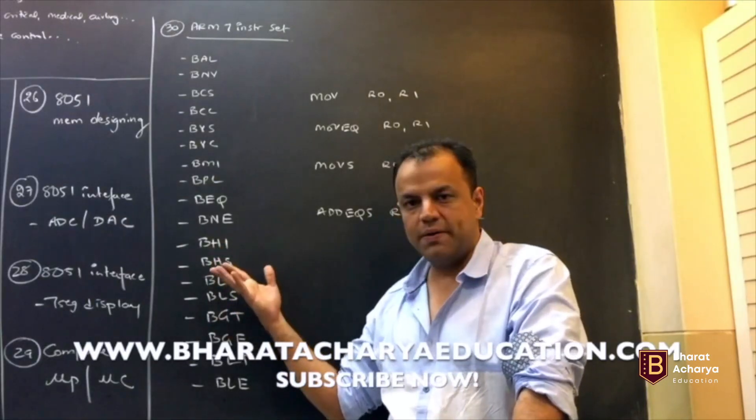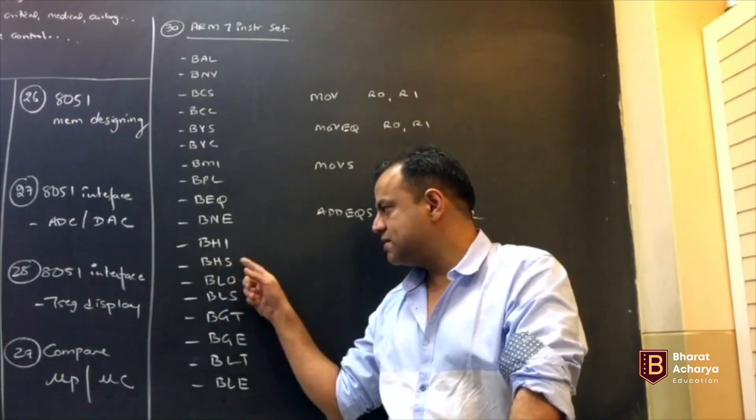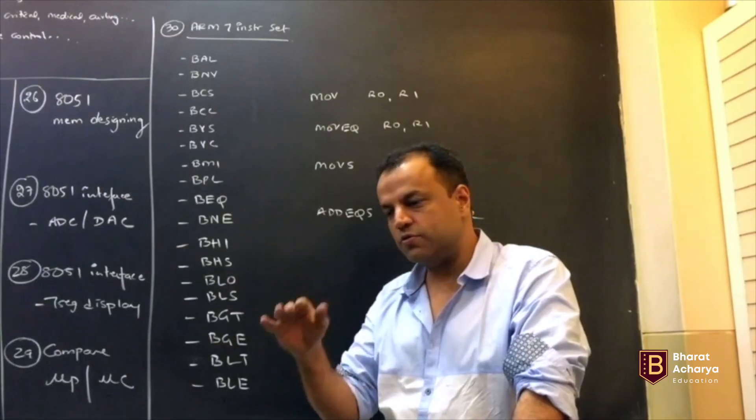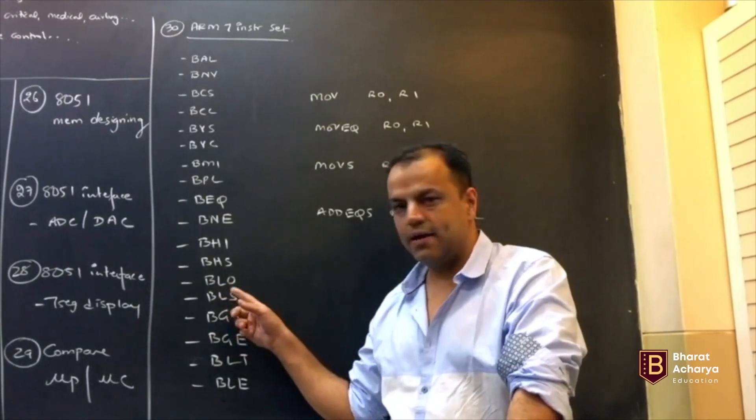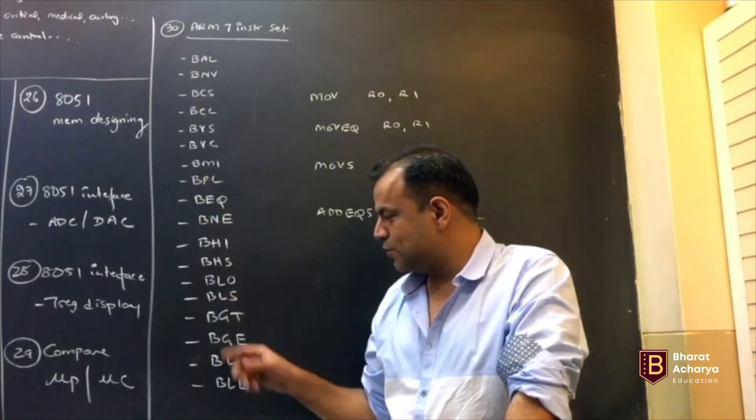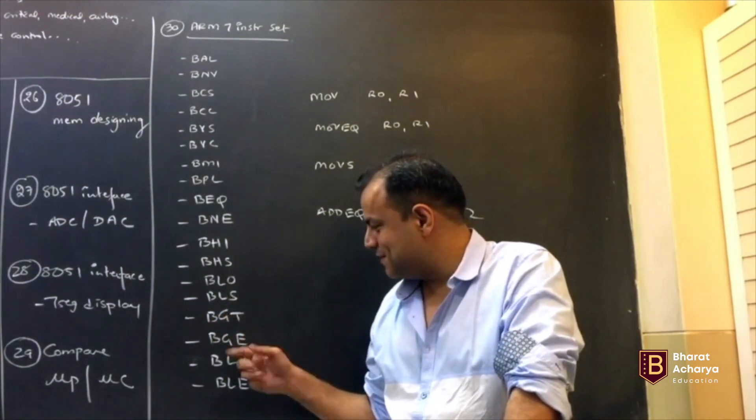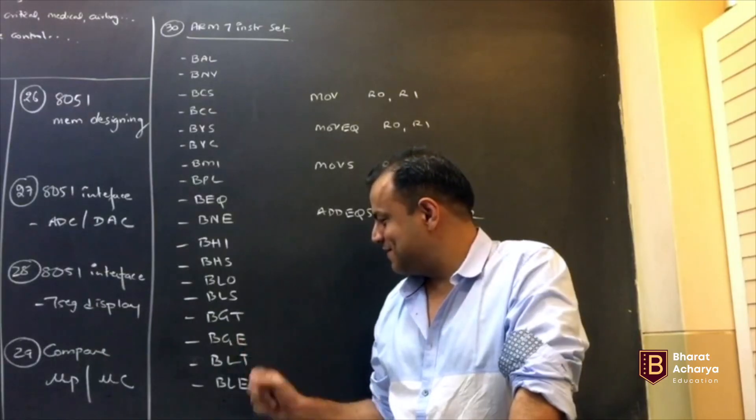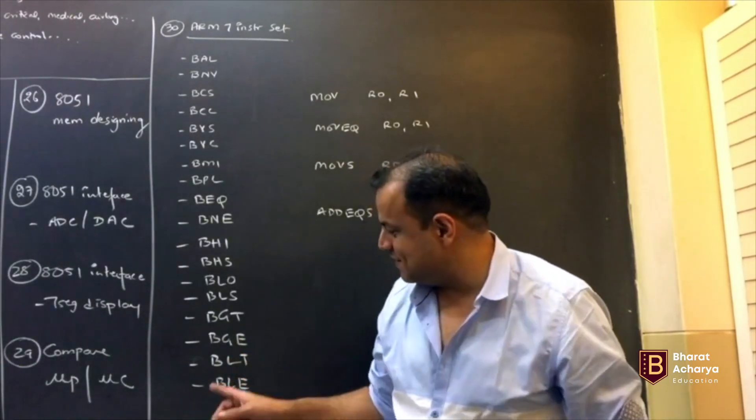Branch if higher. You compare two numbers. The first number is higher. Branch if higher or same. The first number is higher or both of them are same. Branch if lower. BLO is an instruction. Branch if lower or same. Branch if greater than BGT. Branch if greater than or equal to. Branch if less than. Less than equal to.